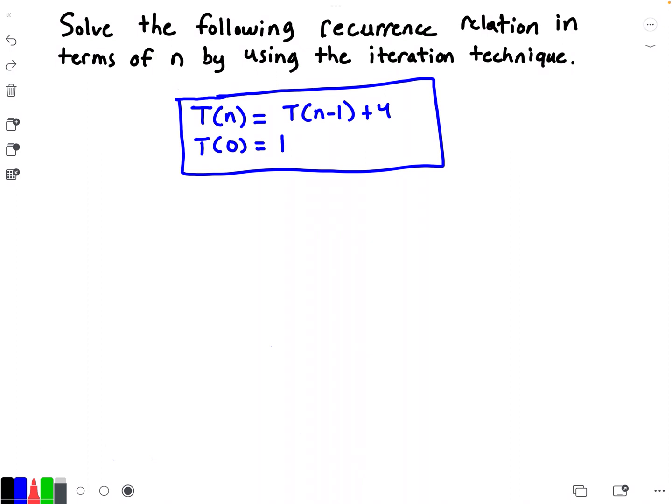The recurrence relation is shown in the blue rectangle. First, I have the recursive case T(n), which states that T(n) is equal to T(n-1) plus 4. Then underneath it, I have the base case, which states that when n is equal to 0, the function T is equal to 1.